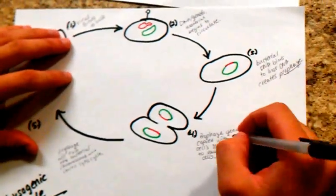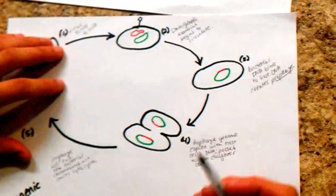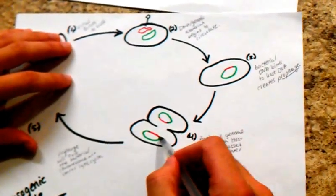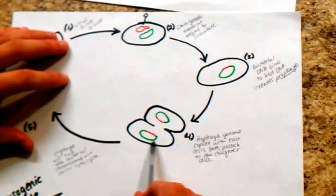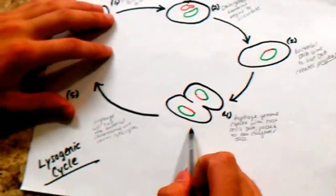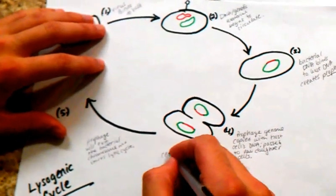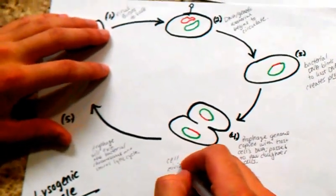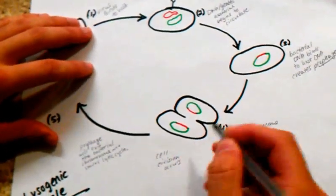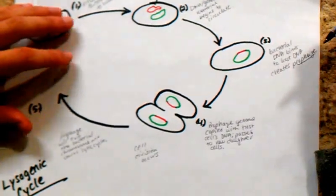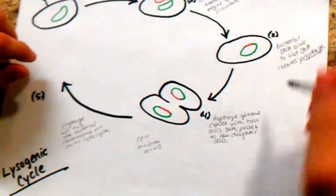The prophage genome is then going to be copied with the host cell's DNA and then it's passed on to two new daughter cells. Cell division occurs, and you have two new cells that are infected with the prophage.